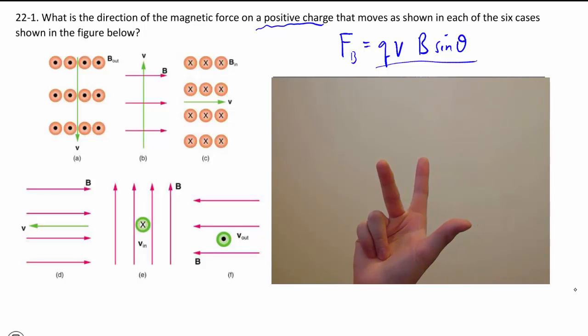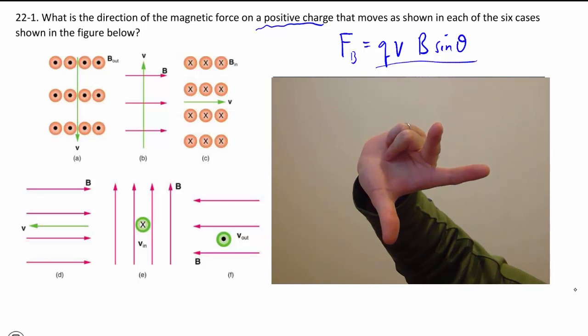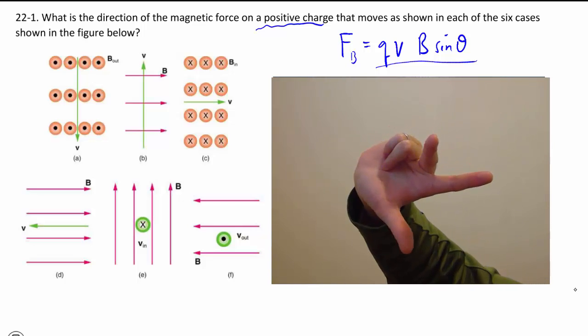So in this case, our thumb is going to be in the same direction as my q times v. This question uses a positive charge, so this will go in the direction of the velocity itself, not opposite it, which means I have to point my thumb downward, so part A. Now hopefully your shoulder is nice and relaxed because the next one is going to be a little more of a twist.